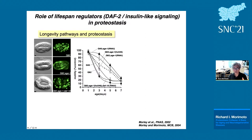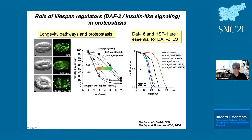We then knocked out the transcription factor regulated by DAF-2/IGF-1 — called DAF-16 or FOXO3 — and returned to the highly aggregated state. Quantitatively, making the animals long-lived suppresses aggregation dramatically. This process is regulated by transcription factors: DAF-16 and HSF-1 protect against aggregation, and when you knock them out they also shorten lifespan dramatically, revealing a direct link between these transcription factors and protection against protein aggregation.